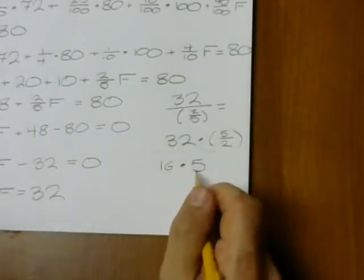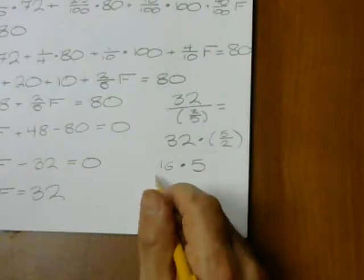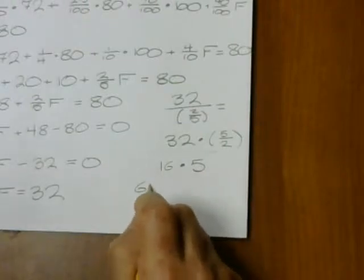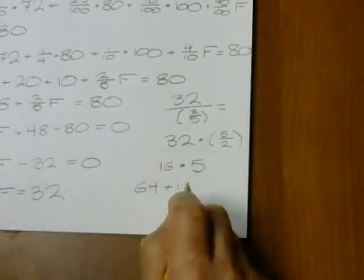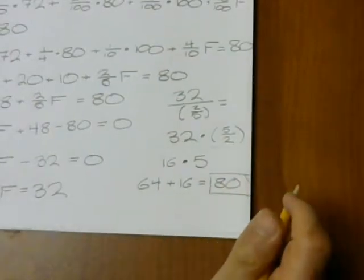Well, 16 times 5, 16 times 2 is 32, so 64 plus 1 other 16, 64 plus 16, actually gives me 80.